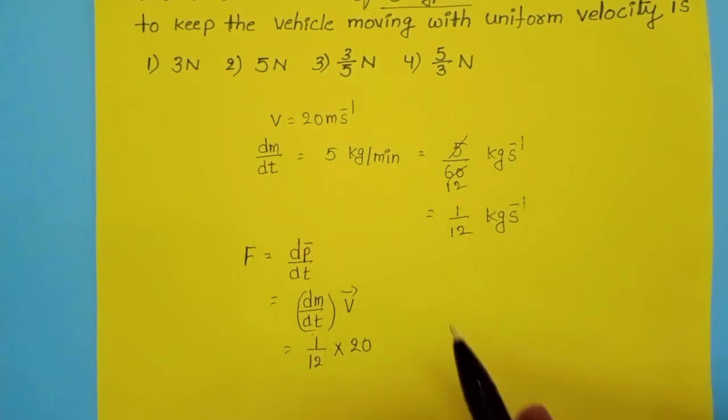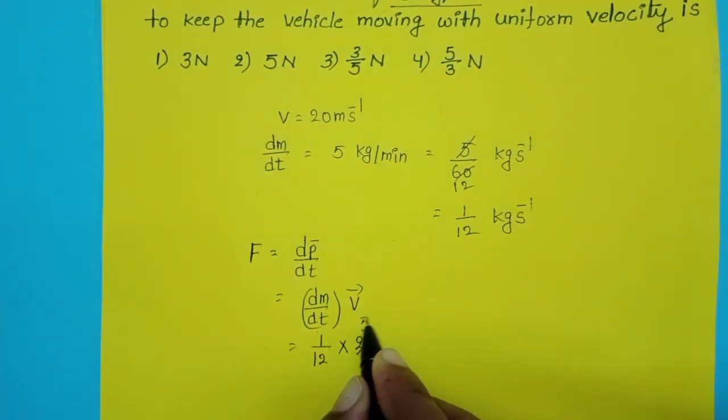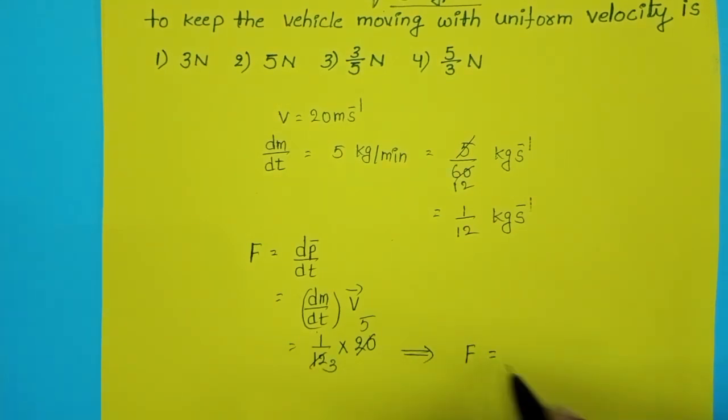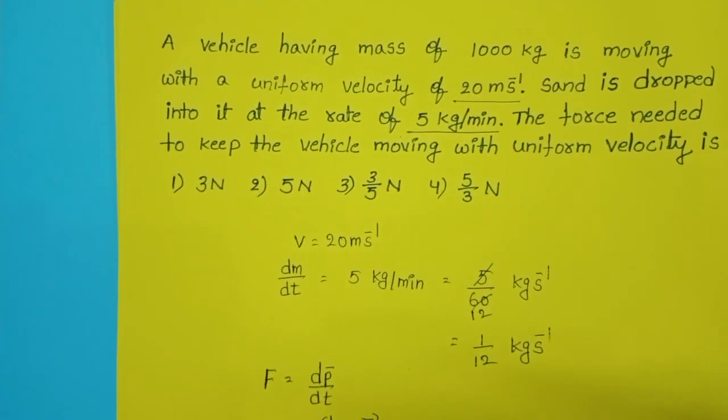Simplify this: 4 times 5 and 4 times 3. The force needed to keep the vehicle moving with uniform velocity is 5/3 newtons. The 4th option is correct.